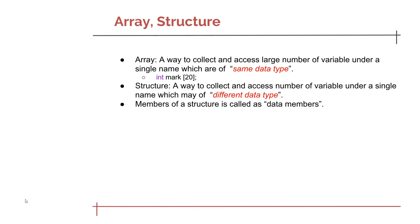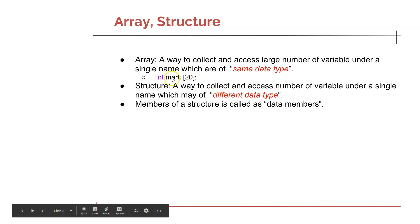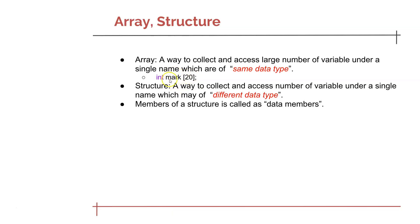An Array is a way to collect and access a large number of variables under a single name, and the key property is that all those variables should be of the same data type. Here is an example: an integer array 'int mark[20]'. Just by using this array with the name mark, you can store 20 different marks in this single variable, instead of declaring 20 individual integer variables like mark1, mark2, etc.